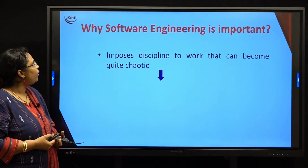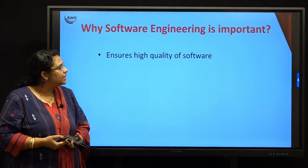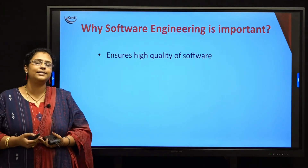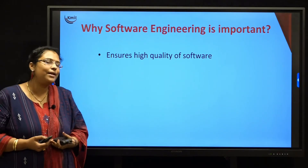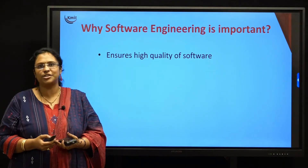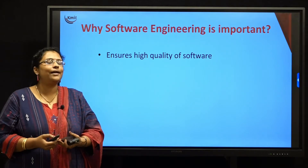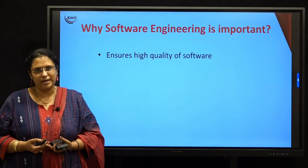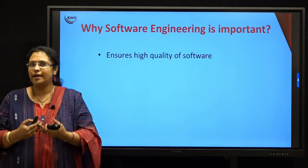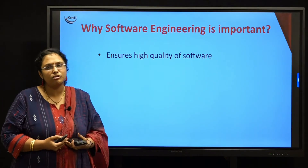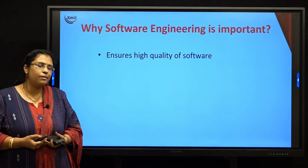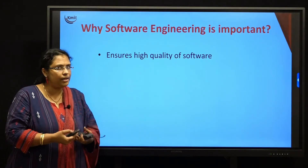The second important reason why software engineering is important is that it ensures high quality of the software. Software engineering makes sure that whatever features and functionalities are there in our software, they are working properly. For example, if you have developed a registration page and missed a few fields before clicking the register button, you would expect an error pop-up message saying which field was missed. If that error message appears, the functionality of the page is working properly. So software engineering makes sure that these functionalities and features work well, enabling you to deliver a good quality product to your customer.